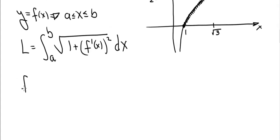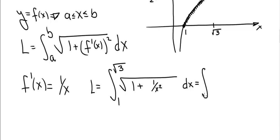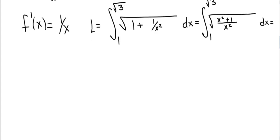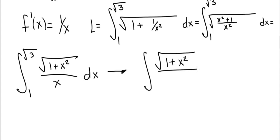For our case, we take the derivative of the function, which is 1/x, and then integrate. The length is the integral from 1 to √3 of √(1 + (1/x)²) dx, which is √(1 + 1/x²). We simplify this as the integral from 1 to √3 of √(x² + 1) / x dx. We drop the limits and find the antiderivative of √(1 + x²) / x.